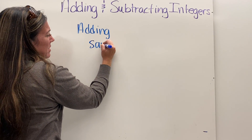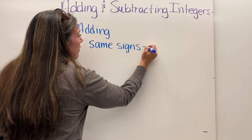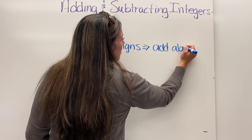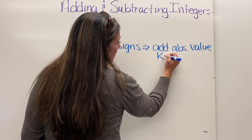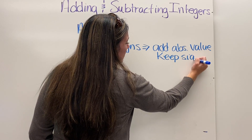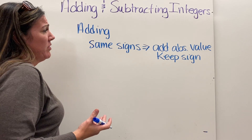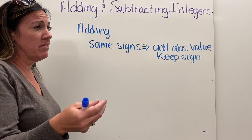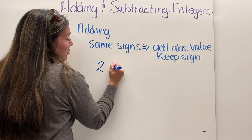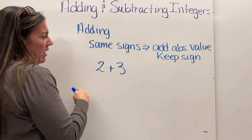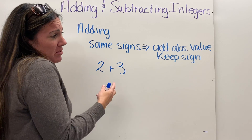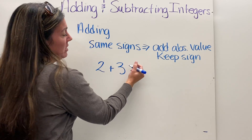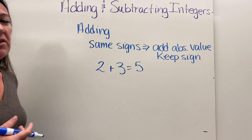If they have the same signs, you add their absolute values and keep the sign. We've been doing this all along — two plus three is five. Two and three have the same sign; they're both positive. The absolute value of two is two and the absolute value of three is three, so we don't really think about it when it's something we're already fluent in. It just ends up being five.